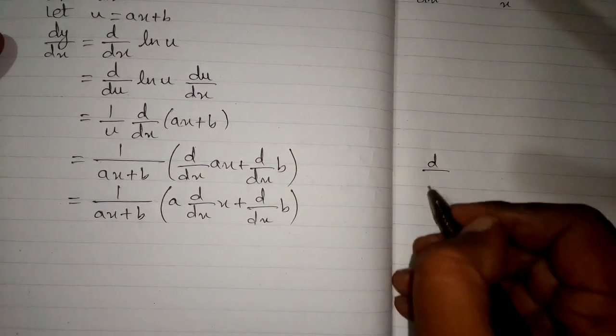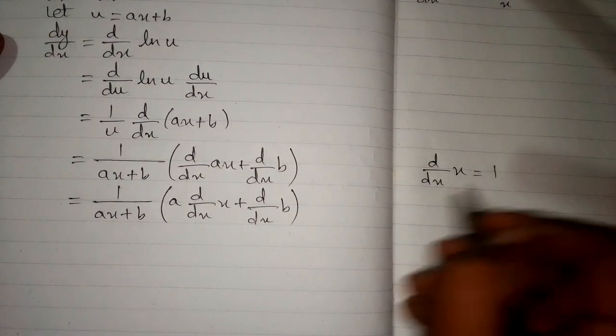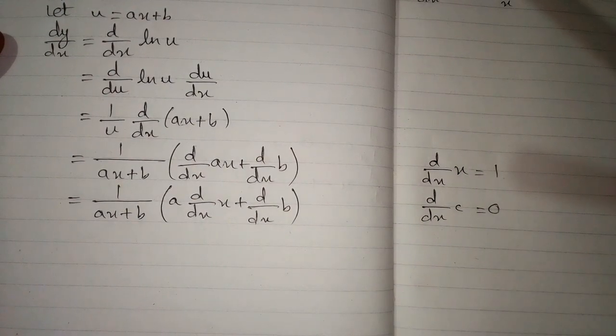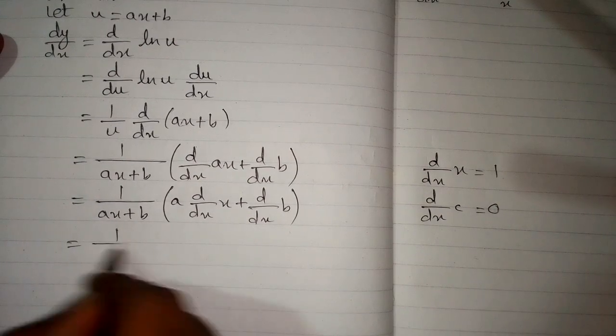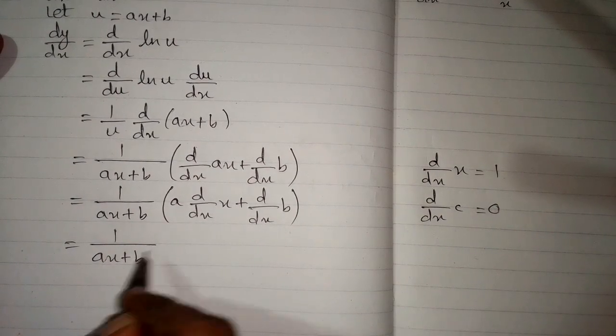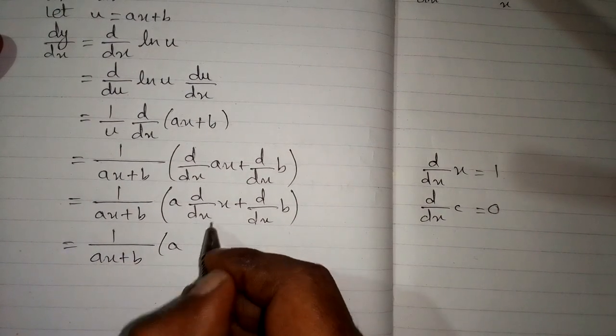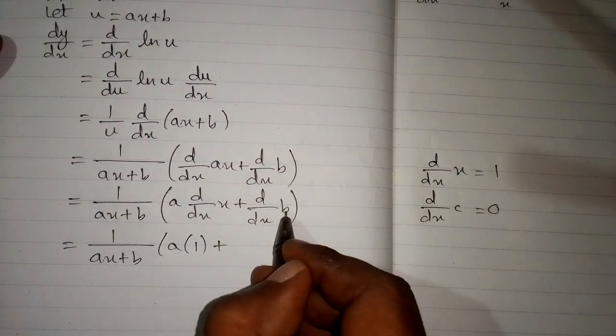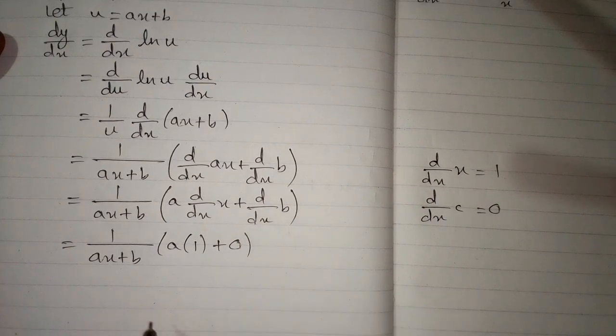We know that the derivative of x is 1 and the derivative of any constant is 0. So we have a times 1 because derivative of x is 1, and the derivative of b, b is constant, so the derivative of b is 0.